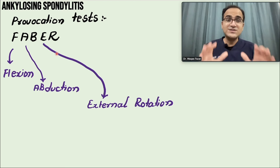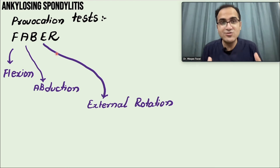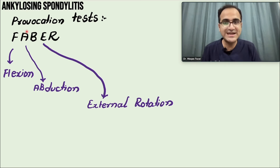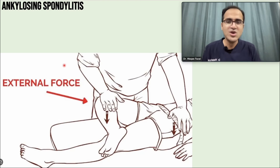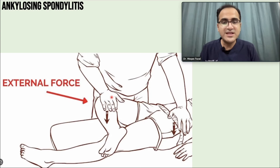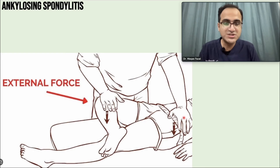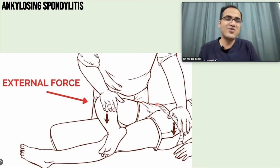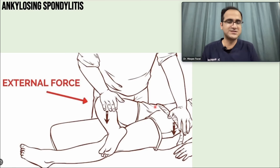Provocation tests are used to assess these patients. The FABER test involves flexion, abduction, and external rotation of the hip joint - you flex the knee, place the leg over the other, and press down while externally rotating. If the patient experiences severe pain, it is a positive test indicating sacroiliac joint inflammation.